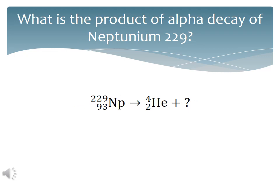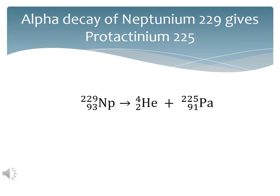In alpha decay, the mass number always decreases by 4 and the atomic number decreases by 2. And if you know the atomic number of the element, then you can look up its symbol and name on the periodic table. Note that the numbers on the right add up to equal the numbers on the left. That is, if you look at the mass numbers, 4 plus 225 equals 229. Same thing with the atomic numbers, 2 plus 91 equals 93.